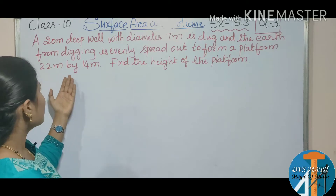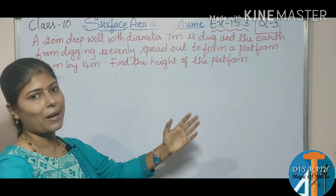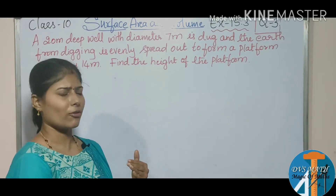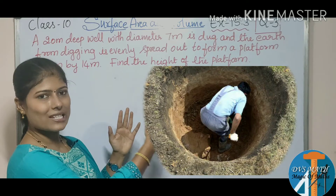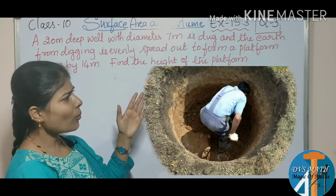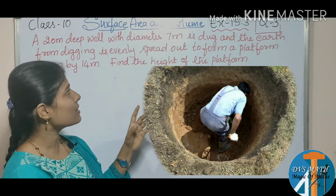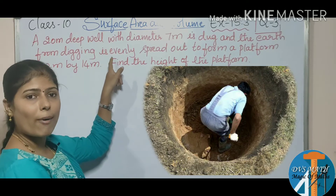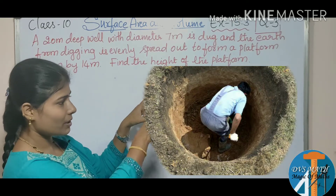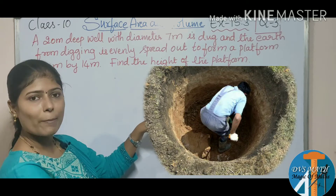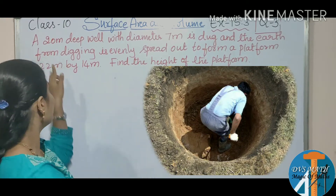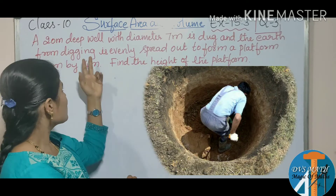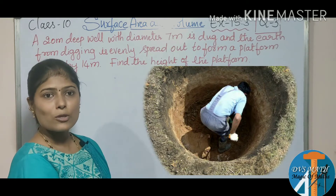The platform measures 22 meters by 14 meters. Find the height of the platform. When you observe digging a well, it looks like a cylinder. So here we have to consider the well in the shape of a cylinder. The depth of the well is nothing but the height of the cylinder, and the diameter is 7 meters.